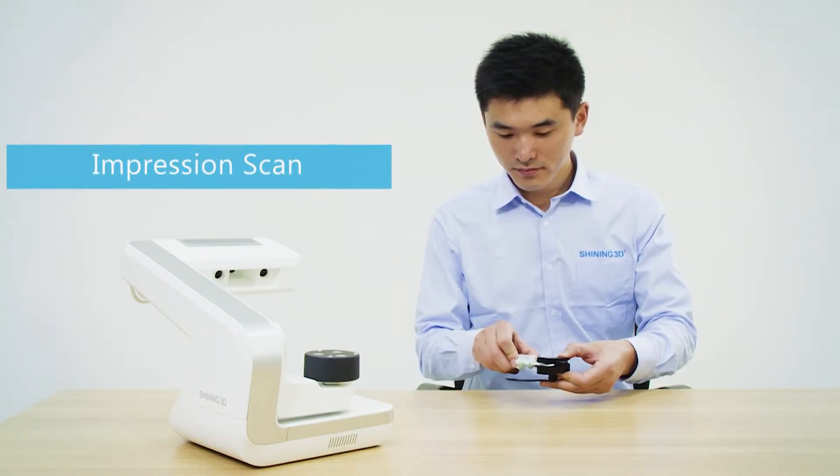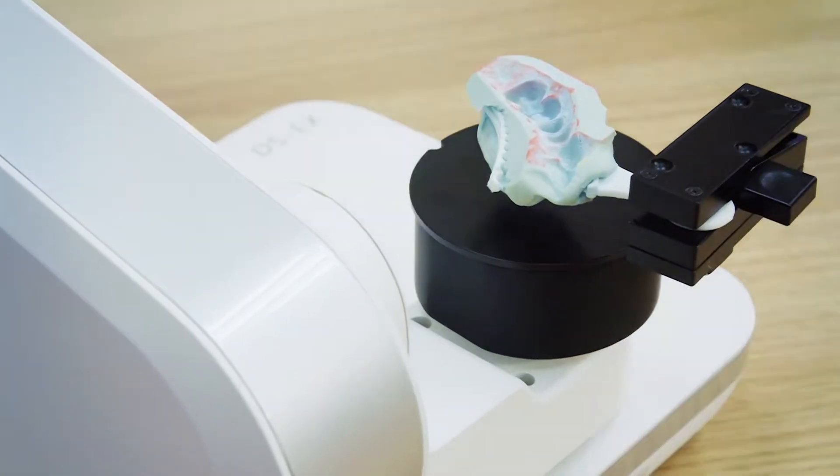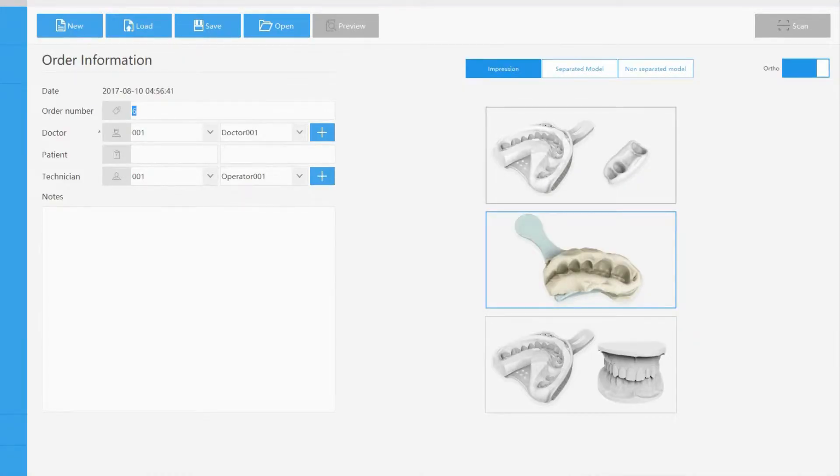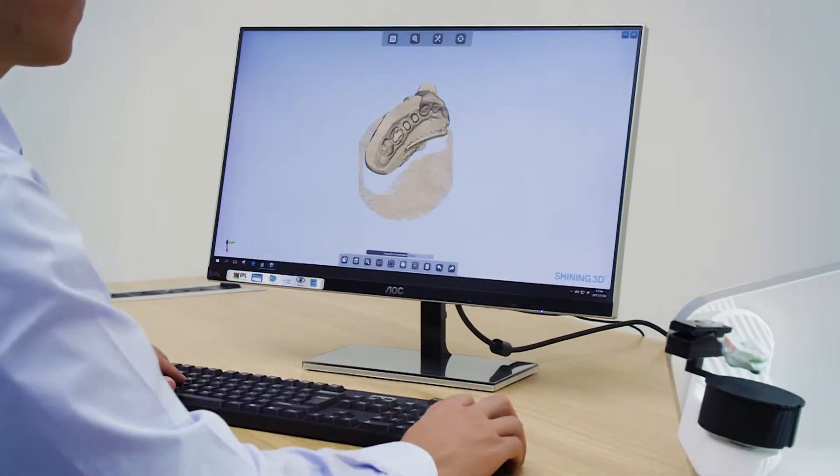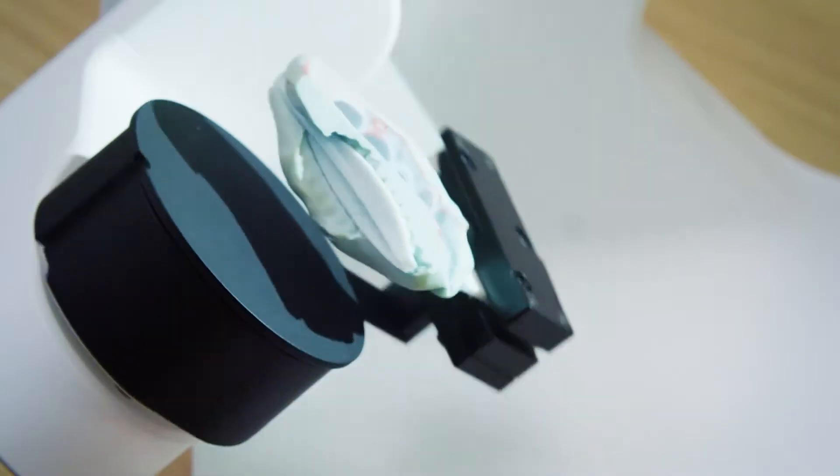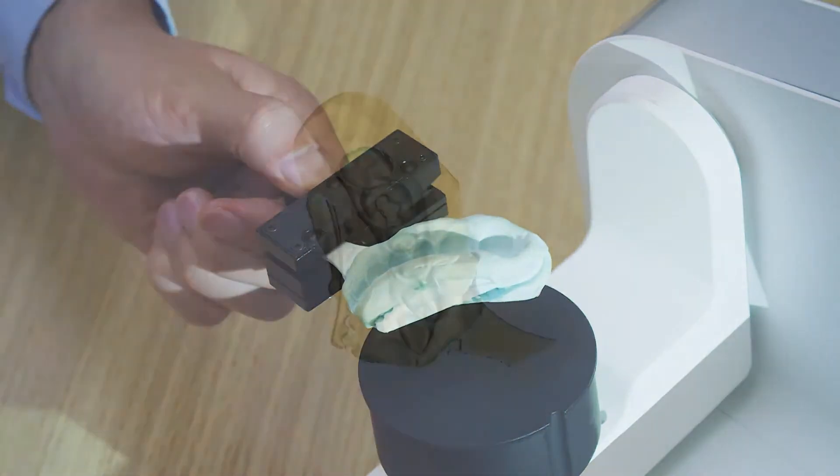Autoscan DS-EX provides multiple impression scan modes to meet your various requirements. Different from Shining 3D's original series of dental scanners, Autoscan DS-EX adopts an innovative algorithm and customized scan module to achieve better impression scan results.